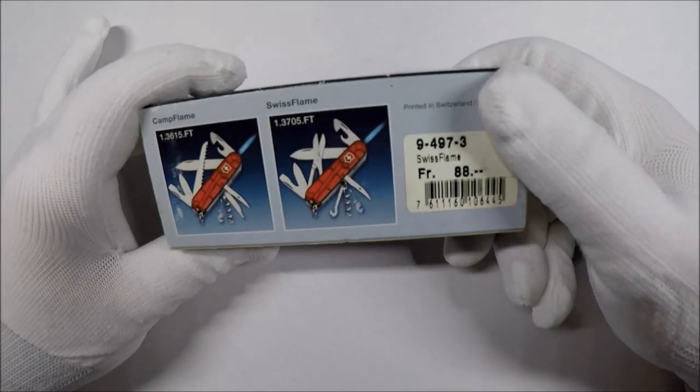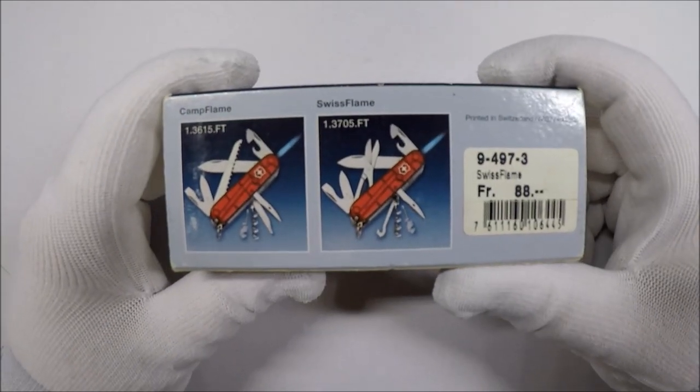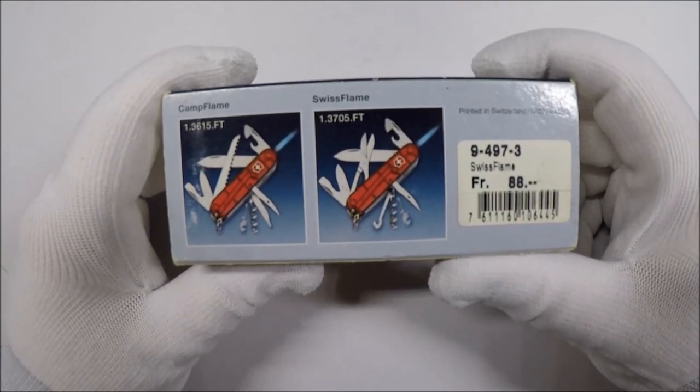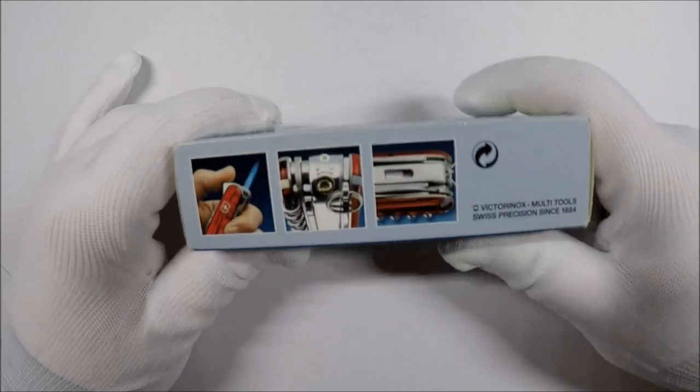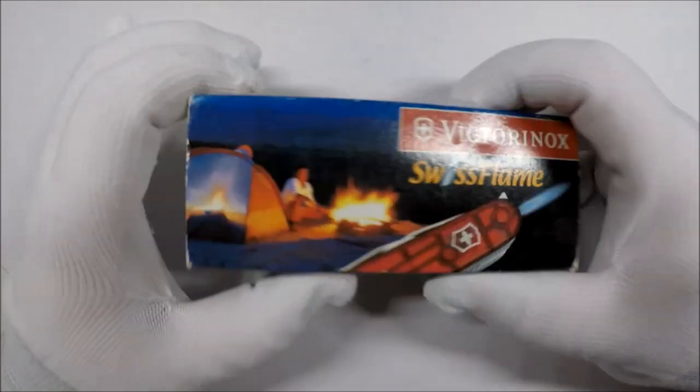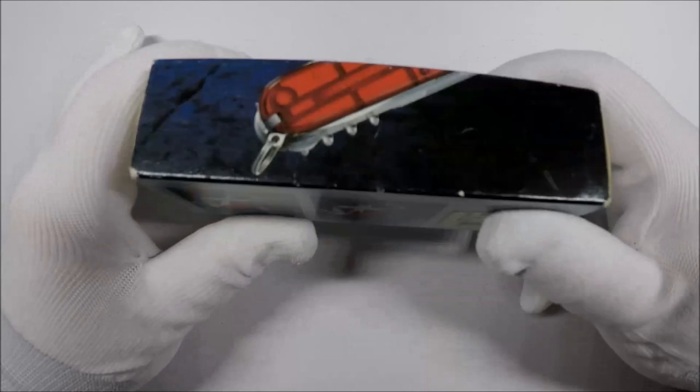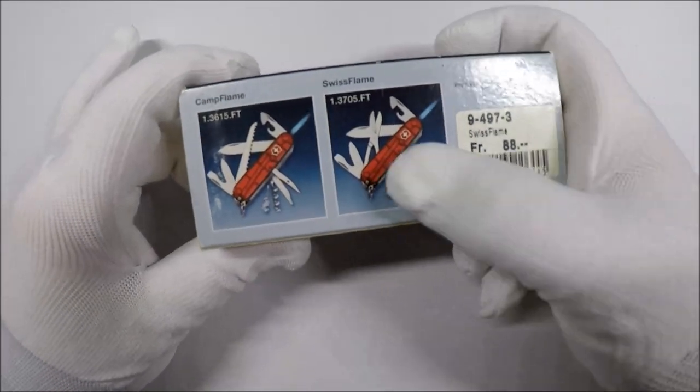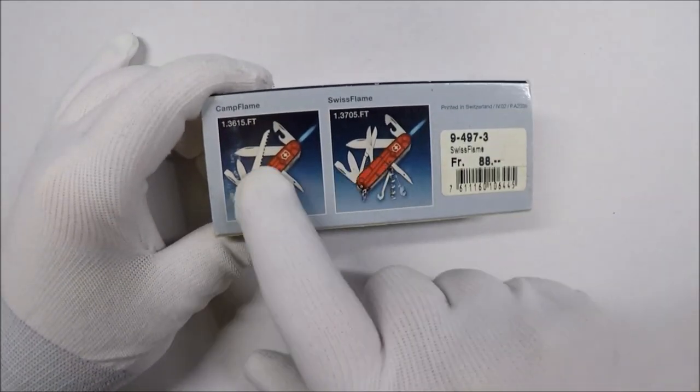So what it is is a Swiss Army knife with a built-in lighter, and as you can see from the packaging there's actually two models of this one. There's a Swiss Flame and a Camp Flame.